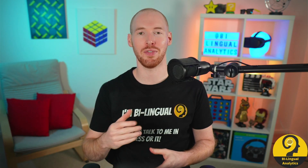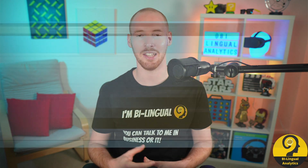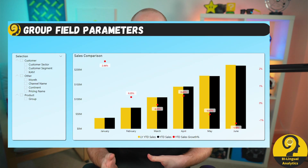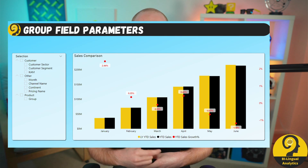So you have created your first field parameter in Power BI and added a few options to allow your users to choose from when it comes to the data fields, but one of them came back and asked you to group those parameters in the slicer. Let's say something like this — fields from the customer table under customer, fields from the product table under product, and all other options under other. If you want to learn how to do it, stick around as this is the topic of today's video. Let's do it!